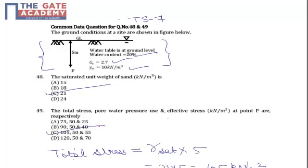Now if we talk about question number 49, it is asked what is the total stress, pore water pressure, and effective stress at point P, which is located 5 meters below the ground level. In this case, the water table is also at ground level.